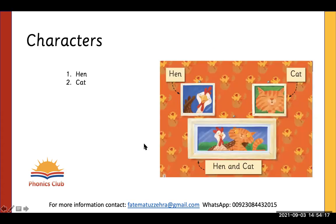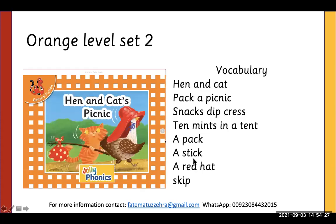There are only two characters in this story: Hen and Cat. You can see their pictures on the frame — separate pictures and together. There are also some vocabulary words for the students to blend, and teachers can write these vocabulary words on the board for blending.